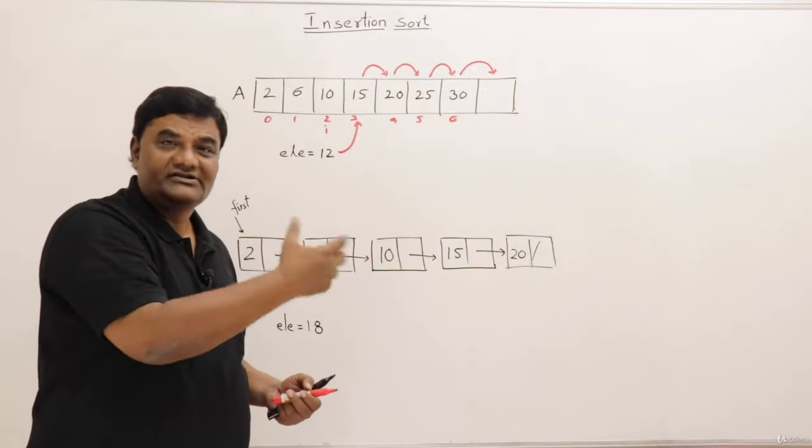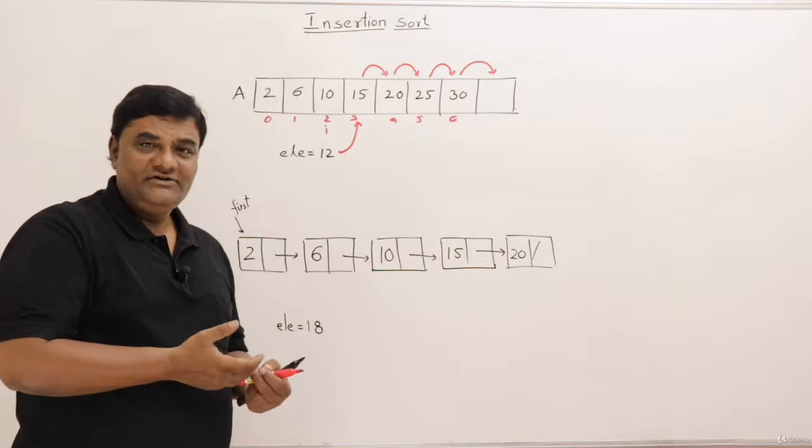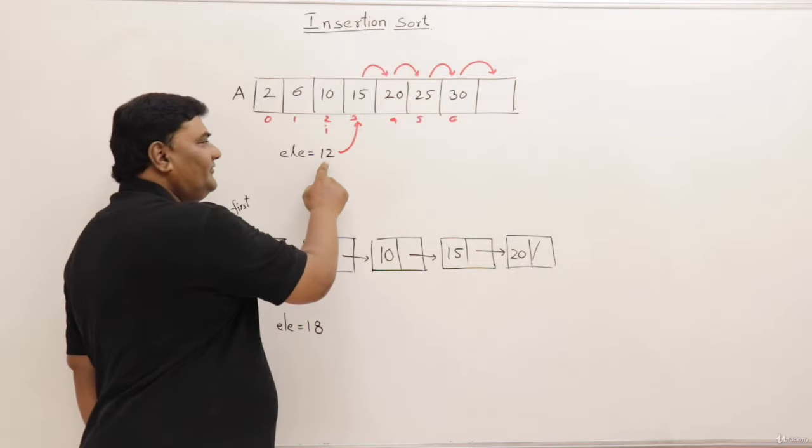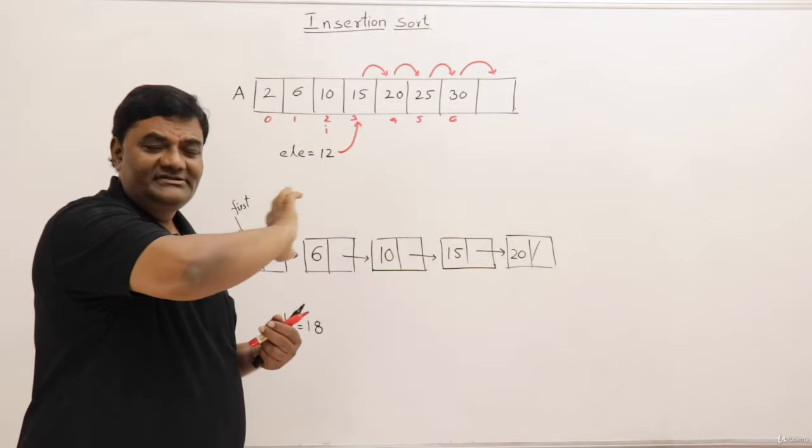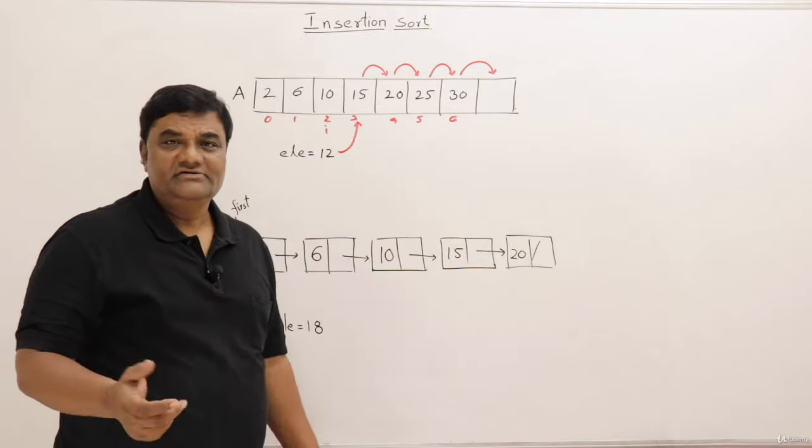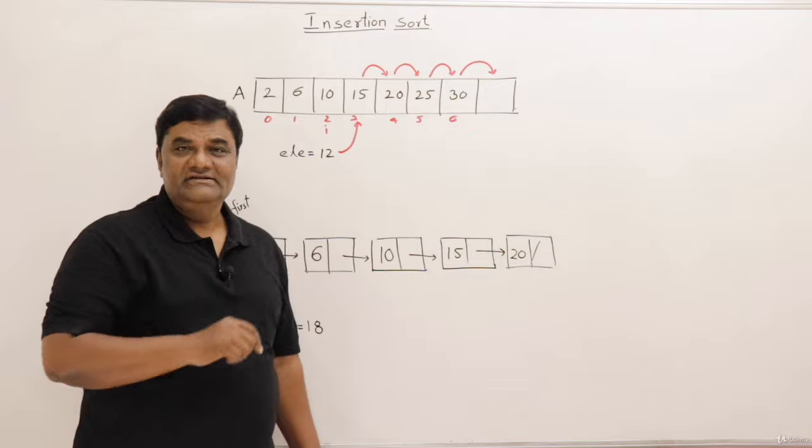From the last, go on shifting larger elements. Then wherever you get any elements smaller than the element that you are inserting, insert the element there. So all the larger elements are shifted on the right hand side. That's all. This is insertion.